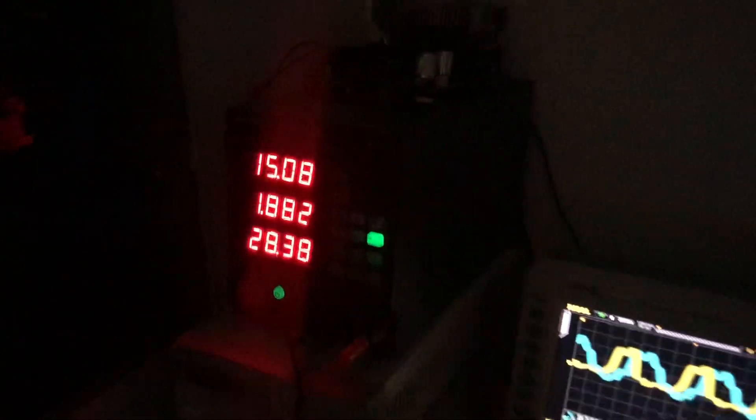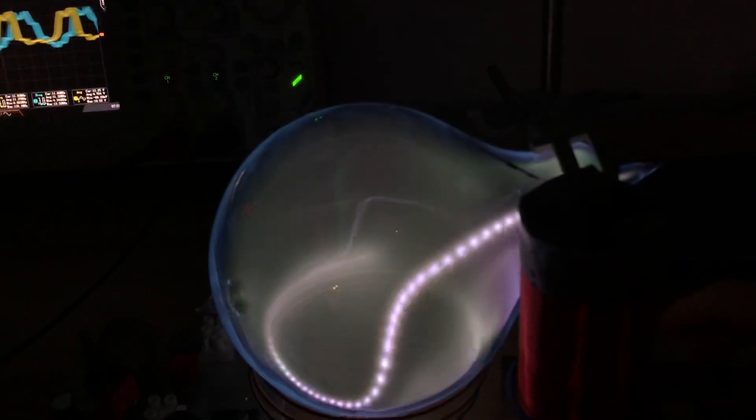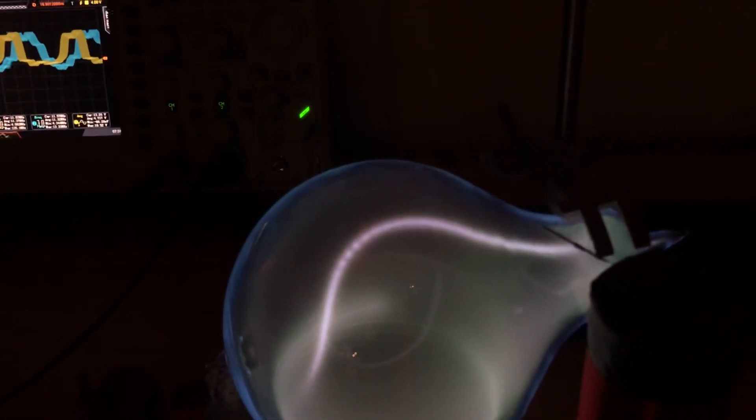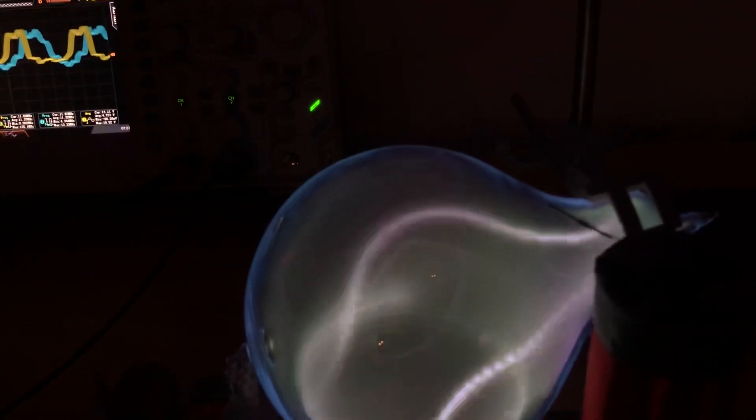Depending on the proximity of the slayer, we change the plasma patterns. So you pull it away, we just get one plasma filament. Put it closer, you get a toroid.